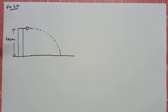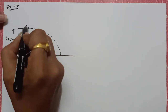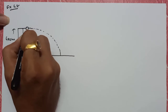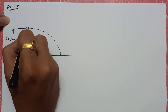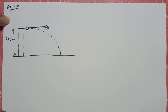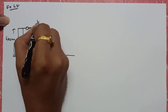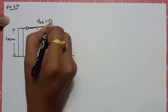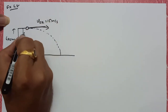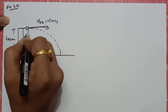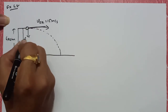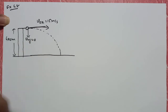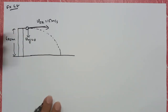So क्या होगा, यह stone धीरे धीरे ऐसे आ जाएगा। यहाँ पर जो भी speed है, if we are talking about initial velocity, तो हमने stone को horizontally throw किया है, तो आपकी जो भी initial velocity है वो horizontal direction में मिलेगी। So आपकी initial x-axis की velocity है 15 meter per second, और initially y-axis की velocity 0 है क्योंकि आपने horizontally फेंका है।